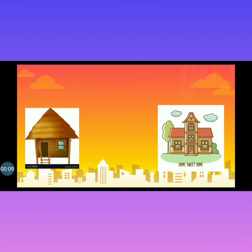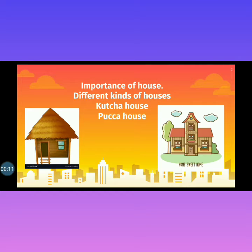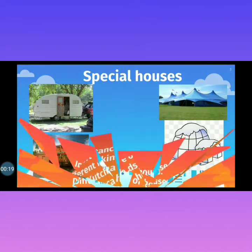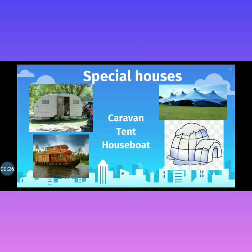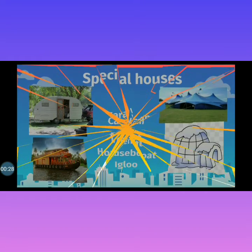By now, we have read about the importance of a house and different kinds of houses — Kaccha house and Pakka house. We have also read about special houses: Karma, Tent, Houseboat, and Igloo.